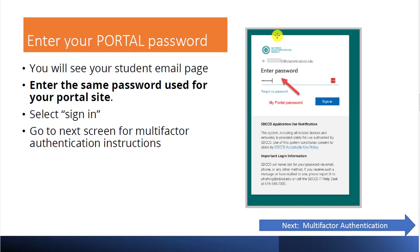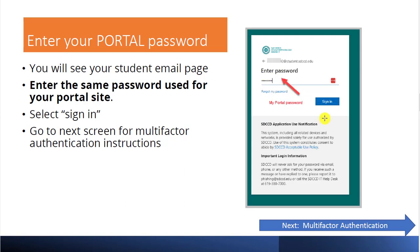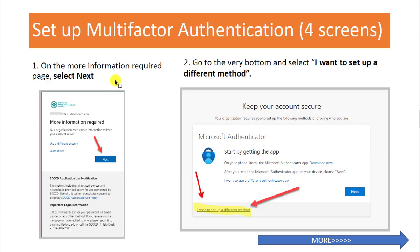Now you'll see the screen where it asks for your password. Use your portal password on this screen and then click Sign In. At this point, a screen will pop up asking for more information — this is your multi-factor authentication. Select Next.